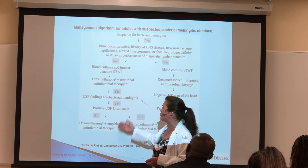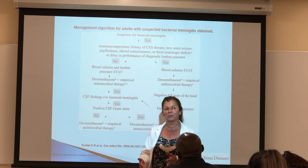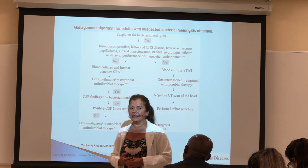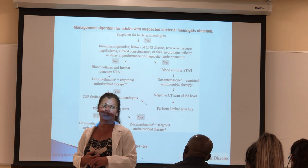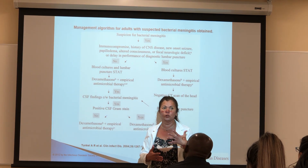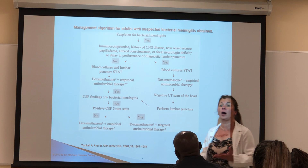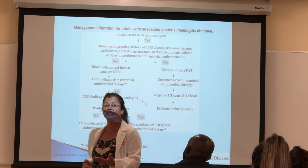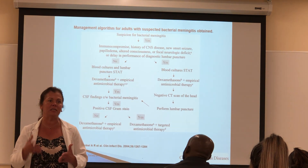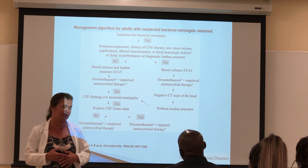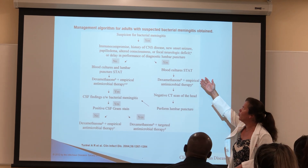If you do have a positive gram stain, you continue the antibiotics you started or adjust based on sensitivity. Now, dexamethasone — it not only improves the penetrance of antibiotics into the blood-brain barrier, but also decreases mortality. There is controversy about whether to use it or not, but it has been proven to decrease mortality. It also decreases the possibility of nephrotoxicity and ototoxicity when you must use gentamicin with vanco or chloramphenicol with vanco.